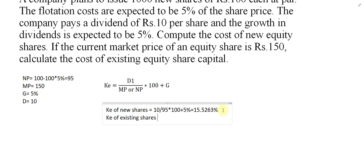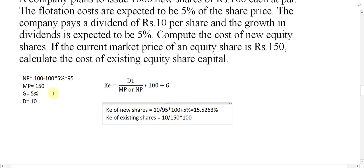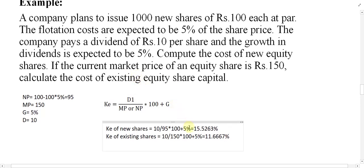For the cost of existing equity shares, we use the market price instead of NP: D ÷ MP × 100 + G = 10 ÷ 150 × 100 + 5% = approximately 11.6%. So the cost of existing equity shares is 11.6%.